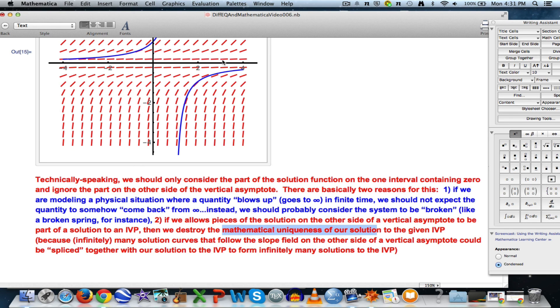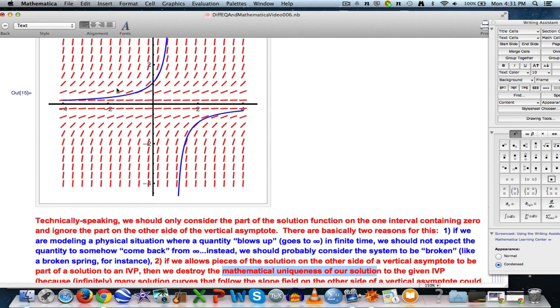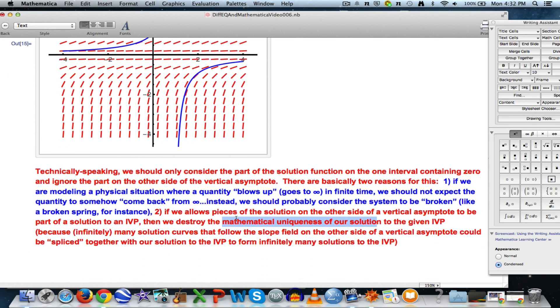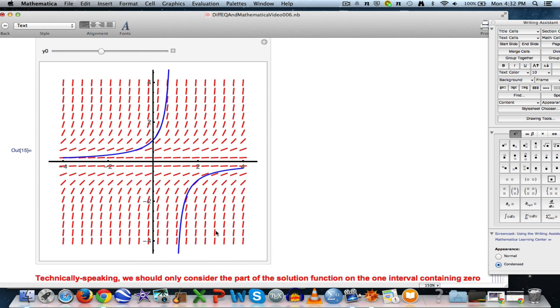And we want solutions of initial value problems to be unique. So that, in a nutshell, is why you should sort of ignore the part over there. Although I don't typically necessarily want to get rid of its graph. And with that, I'll end this video.